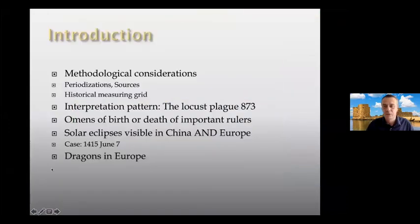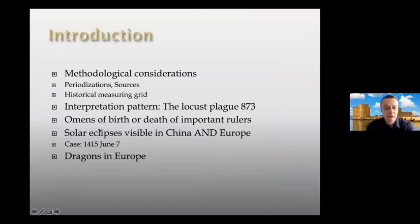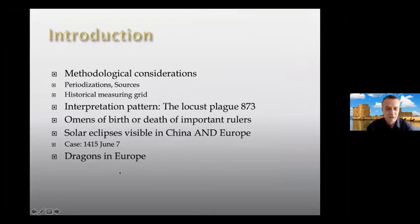I will give you an overview over the historical sources belonging to the natural events in Europe. First, we have a lot of methodological questions. I will give a quick overview about my periodization, the sources. We have to look at interpretation patterns in Europe. We take the example of locusts in 873. Then we have a big table with omens of birth and death of important rulers. And in the end, the solar eclipses which were visible in China and Europe — nobody has done a look on this before. And we will finish with a short view on the dragons.